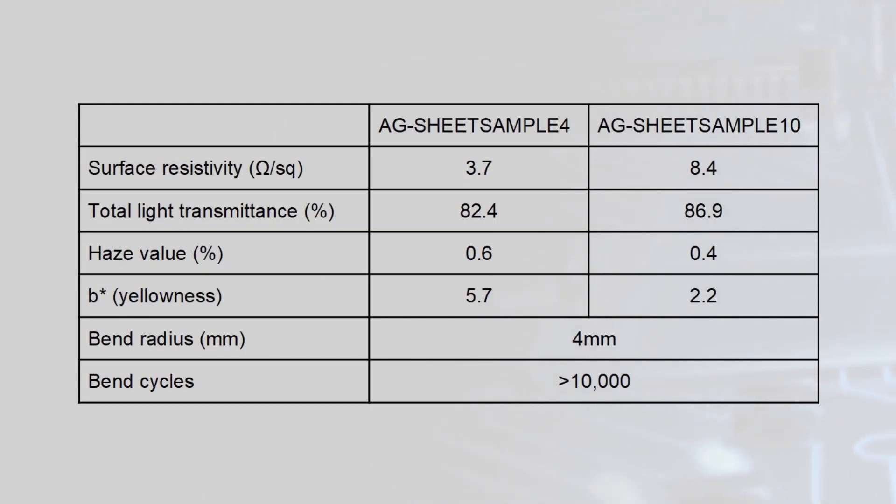TDK's FleaClear AG stacked films offer lower surface resistivity than ITO films, with options under 4 ohms per square, which is one-tenth or less of conventional ITO films. Optically, AG stacked films also have improved total light transmittance, a lower haze value, less yellowness, and better heat shielding due to higher IR reflectance.